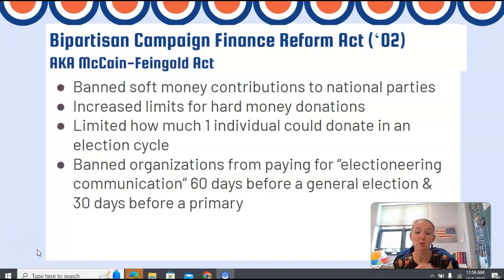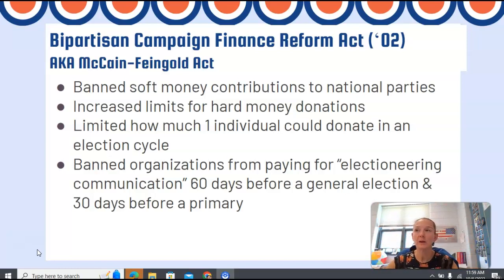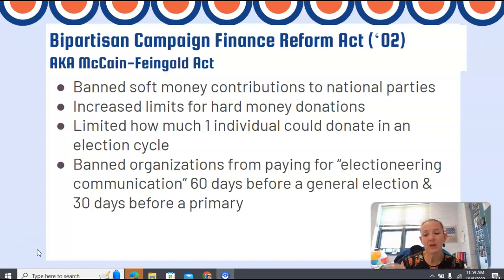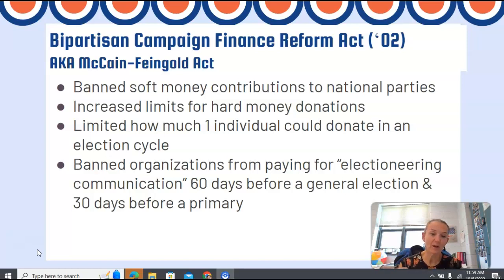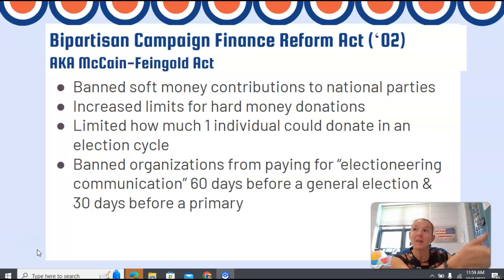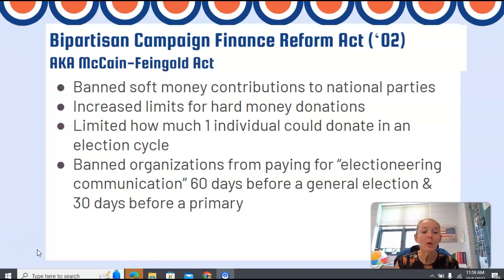It also limited how much one individual could donate in a campaign cycle — so total, between however many candidates they choose to donate to, they can only donate a total of X amount of dollars, and all of that has to be recorded for a paper trail. The big thing, though, was that it banned organizations from paying for electioneering communication 60 days before the general election or 30 days before a primary election. In essence, it was talking about advertising — organizations spend money they're not necessarily giving to a candidate, which is also soft money, an independent expenditure: money spent to support a candidate without giving it directly to them.